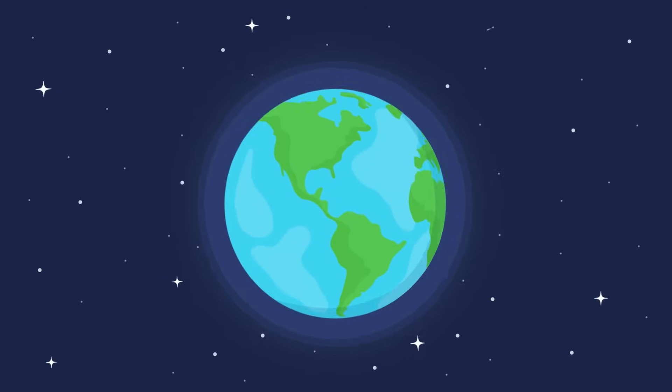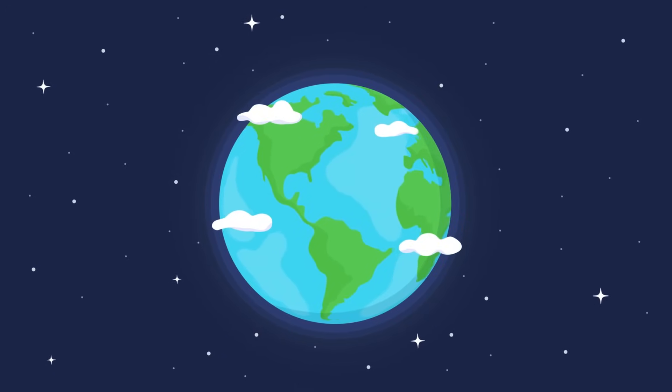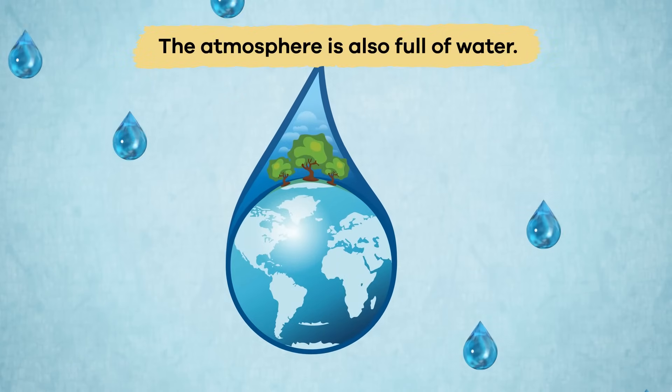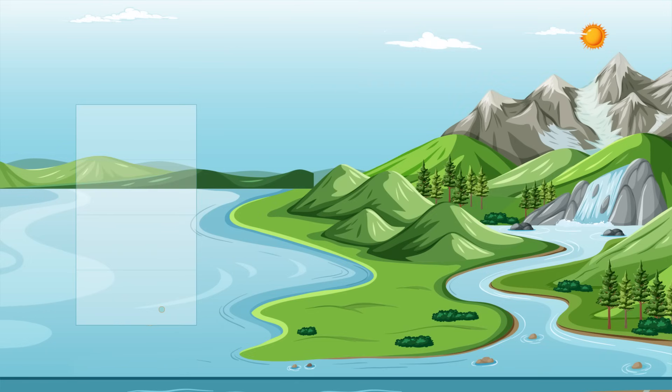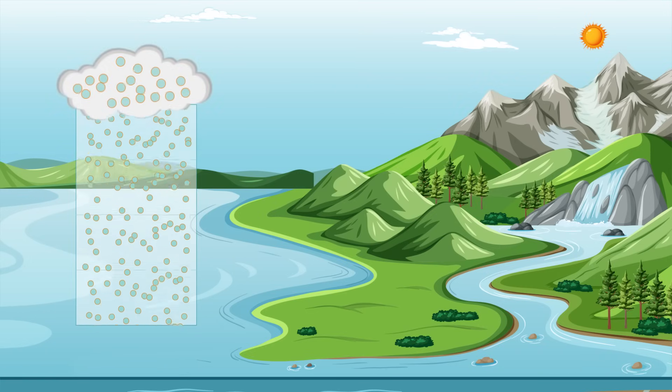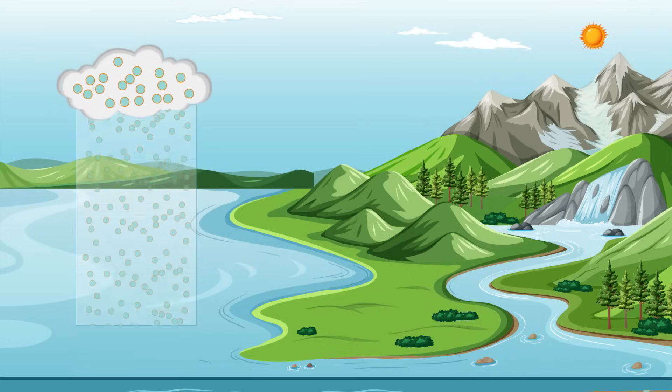The atmosphere includes all the gases that surround the planet, including the oxygen that we breathe. The atmosphere is also full of water. The water in the atmosphere is made of tiny drops that are too small for the human eye to see. Clouds start forming when the liquid water droplets in our atmosphere transform into gaseous water vapor.